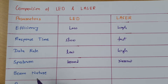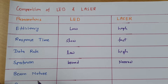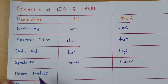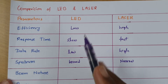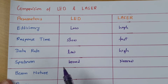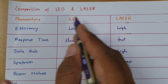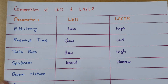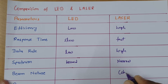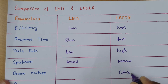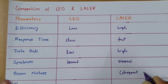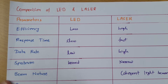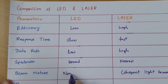The next parameter is beam nature, which refers to the coherence of the beam being transmitted. The light beam is not coherent in the case of LED, while the light beam is coherent in the case of laser.